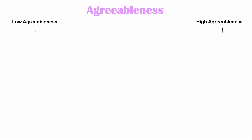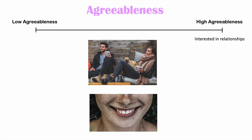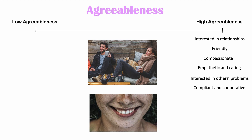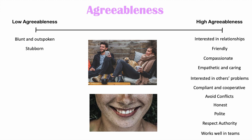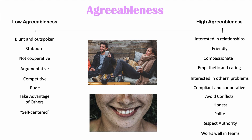Now let's talk about agreeableness. Individuals high in agreeableness are interested in relationships, friendly, compassionate, empathetic, and caring. They're interested in others' problems, compliant, cooperative, conflict-avoidant, honest, polite, and respectful of authority — and they work well in teams. In contrast, low agreeableness individuals tend to be blunt, outspoken, stubborn, uncooperative, argumentative, competitive, and rude. They may take advantage of others, be considered self-centered, and often do not respect authority.